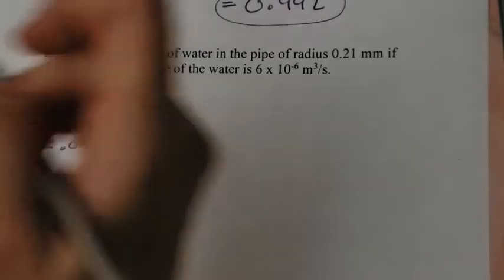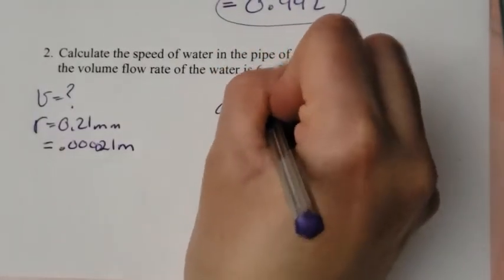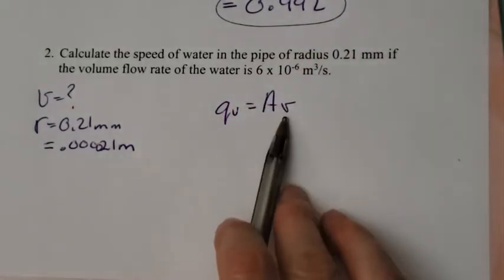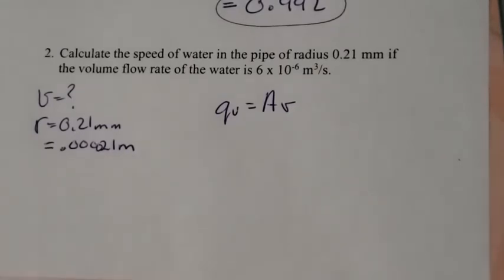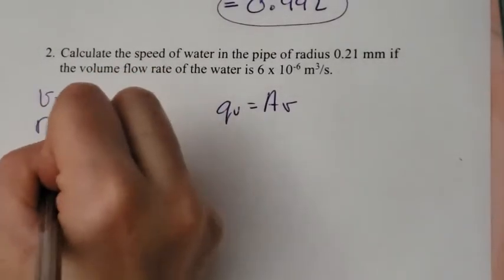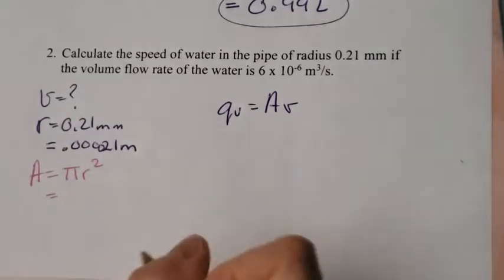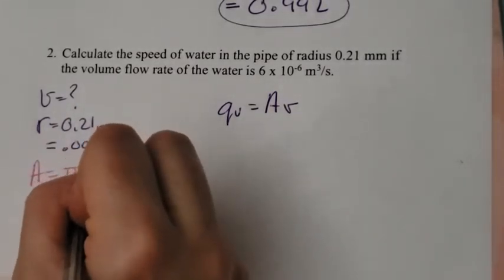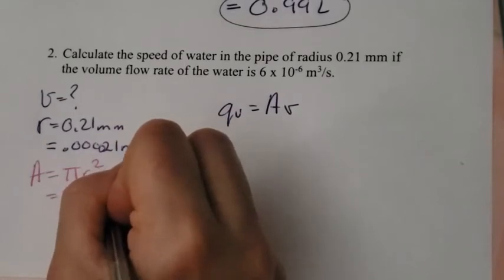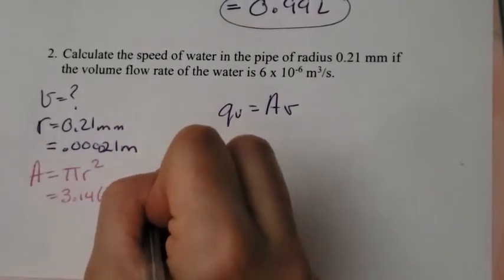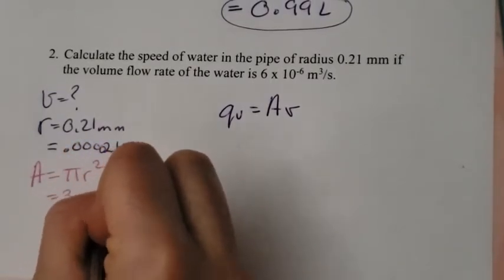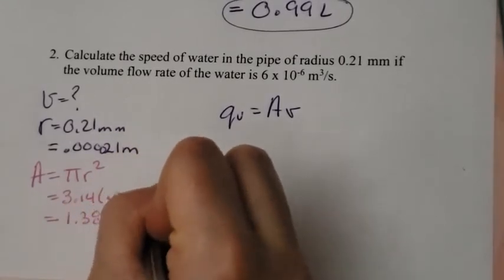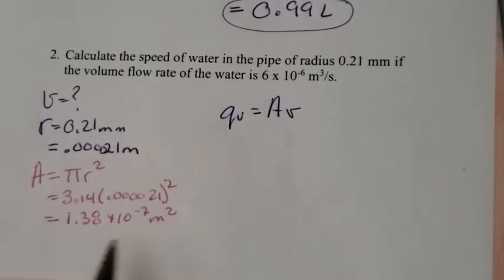The formula I'm using is QV equals A times the speed. I need the area. If I have the radius, I can figure out the area. A pipe is just a circle, so I want the formula for area of a circle, which is pi r squared. I plug in my numbers: 3.14 times the radius 0.000021 squared, and I end up with 1.38 times 10 to the negative 7 meters squared. Now I have my area.